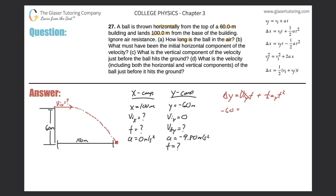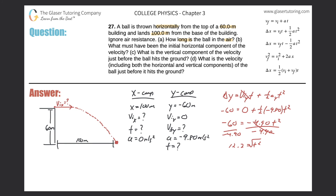Plugging in: negative 60 equals zero (since initial y velocity is zero) plus one-half times negative 9.80 times t squared. Simplifying: negative 60 equals negative 4.90 t squared. Dividing both sides by negative 4.90 gives 12.2 equals t squared. Taking the square root: t equals 3.49 seconds. That is the time the ball is in the air. That takes care of letter A.